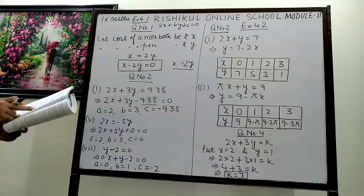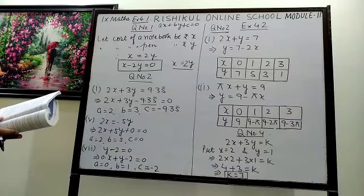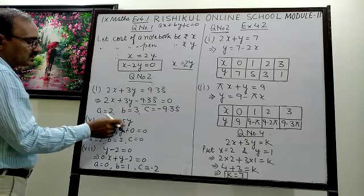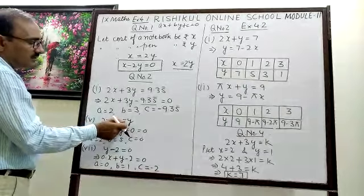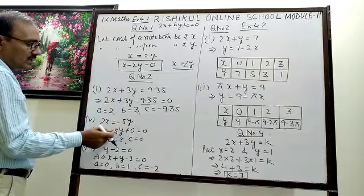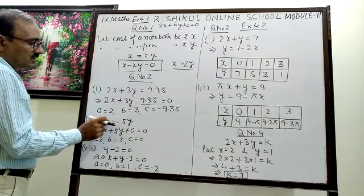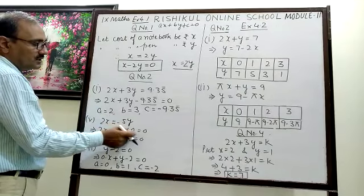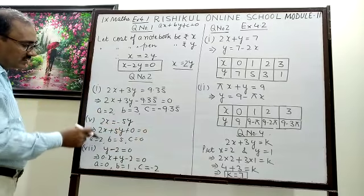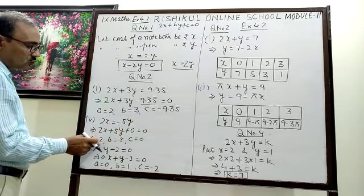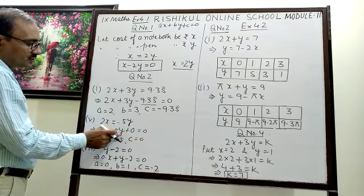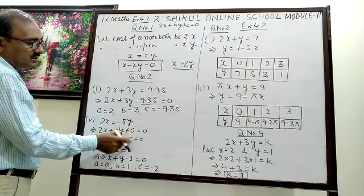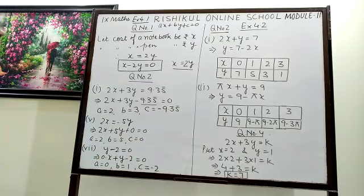The third and fourth parts you can do yourself. For the fifth part, 2x equals minus 5y — transfer minus 5y to the left and the sign changes. In place of C, you put 0. So A, the coefficient of x, is 2; B, the coefficient of y, is 5; and the constant C is 0.